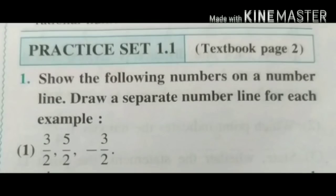Practice set 1.1, question number 1: show the following numbers on a number line. Draw a separate number line for each example. The rational numbers given are 3 upon 2, 5 upon 2, and minus 3 upon 2. We have to represent these on a number line.